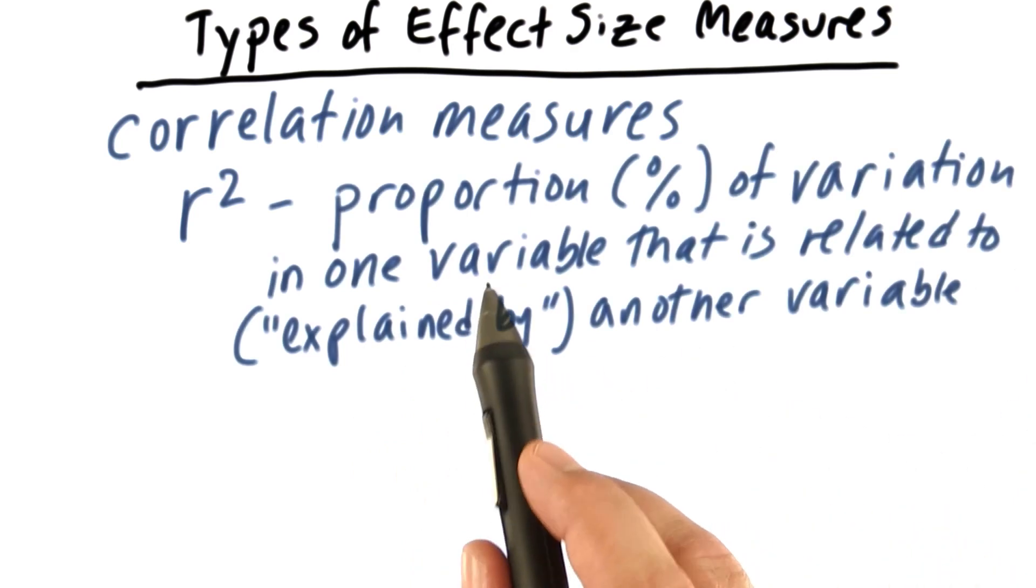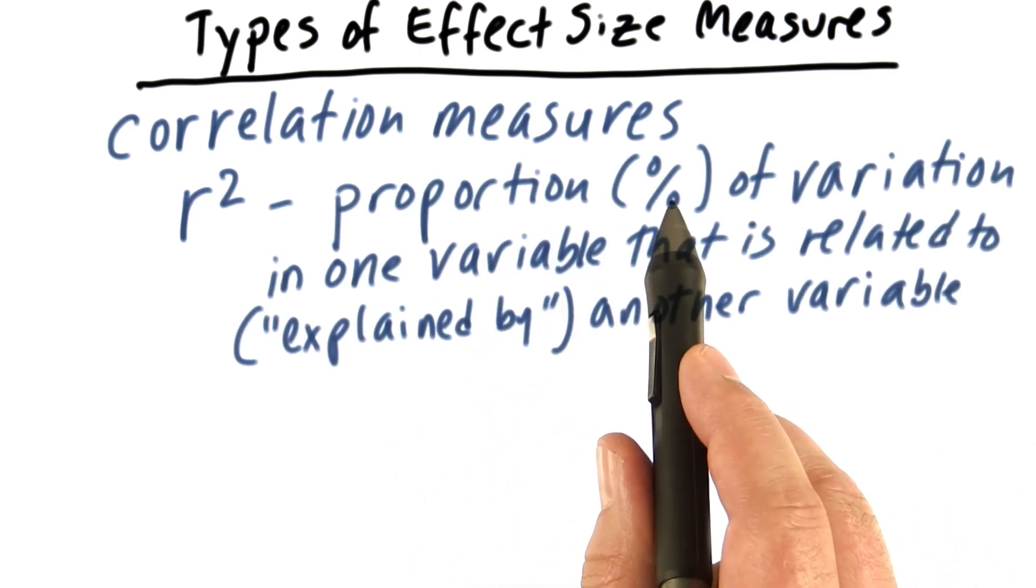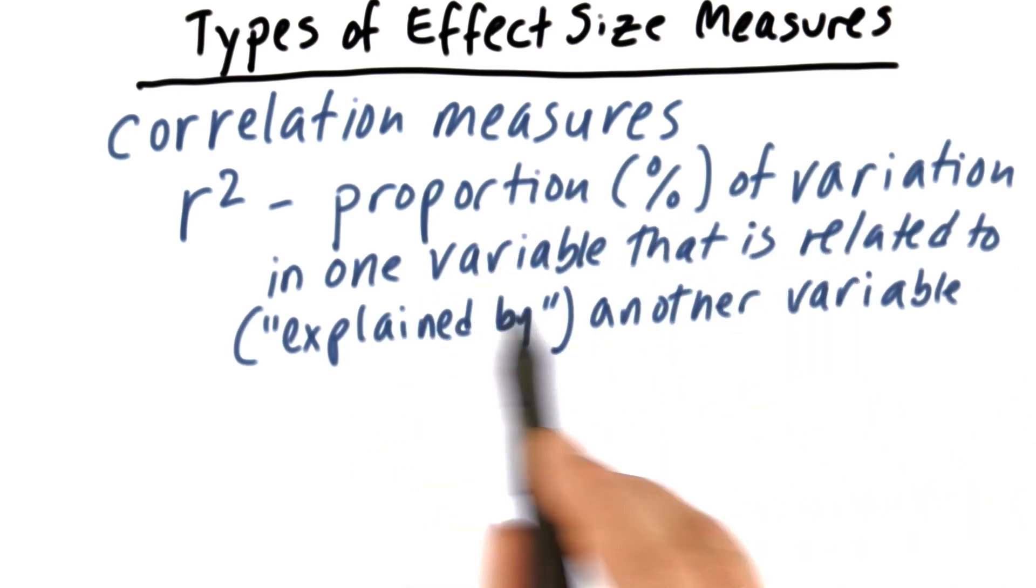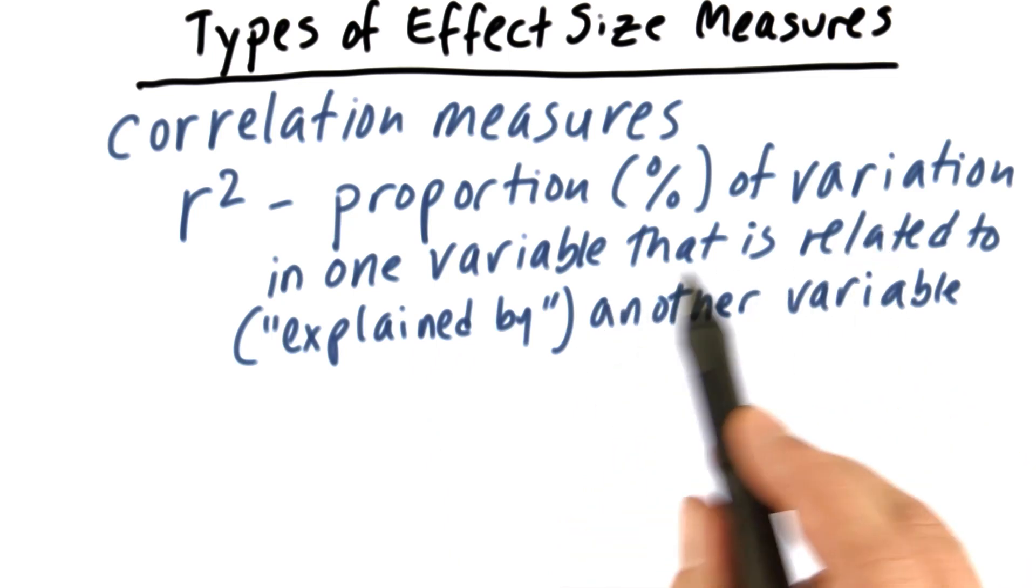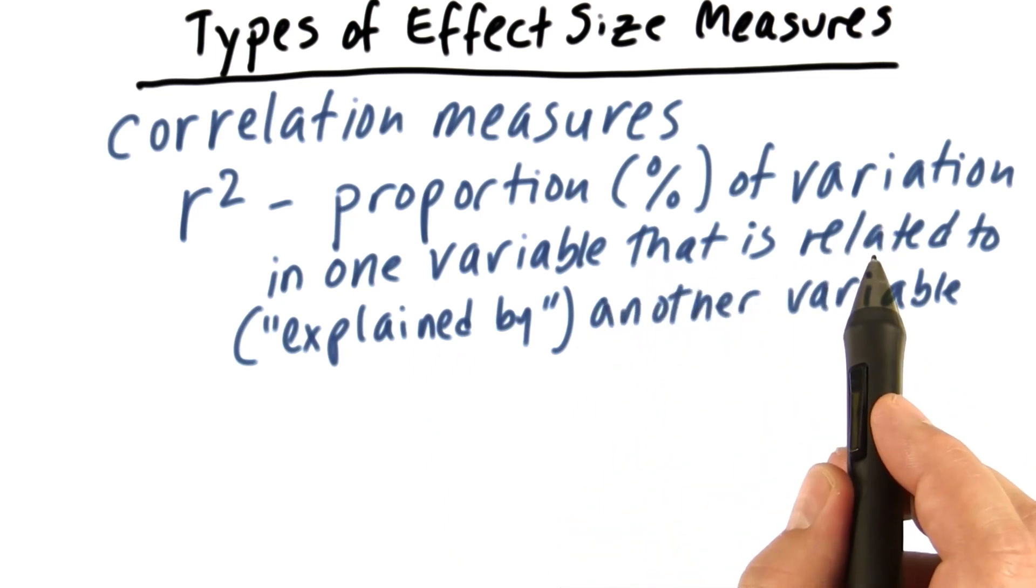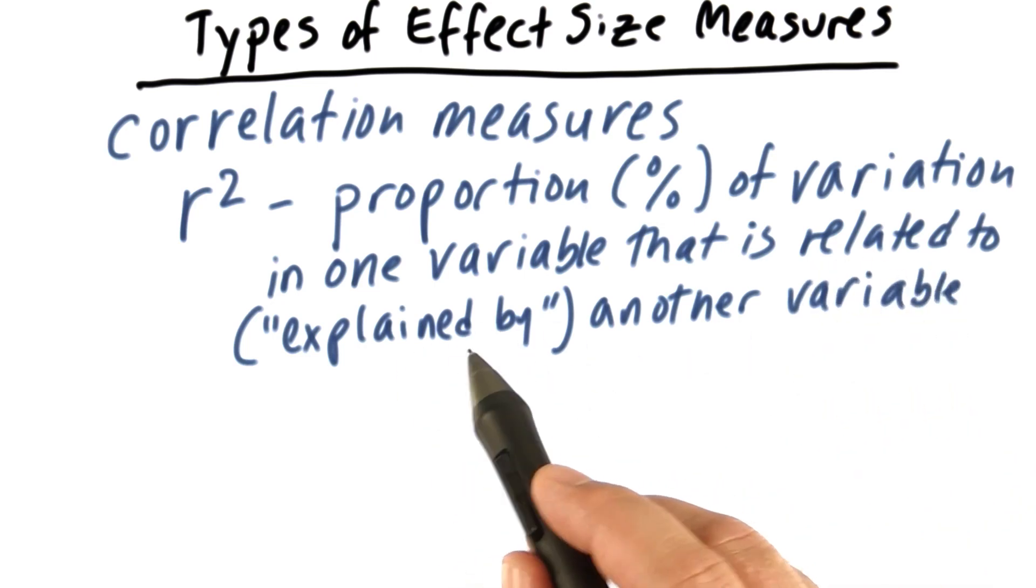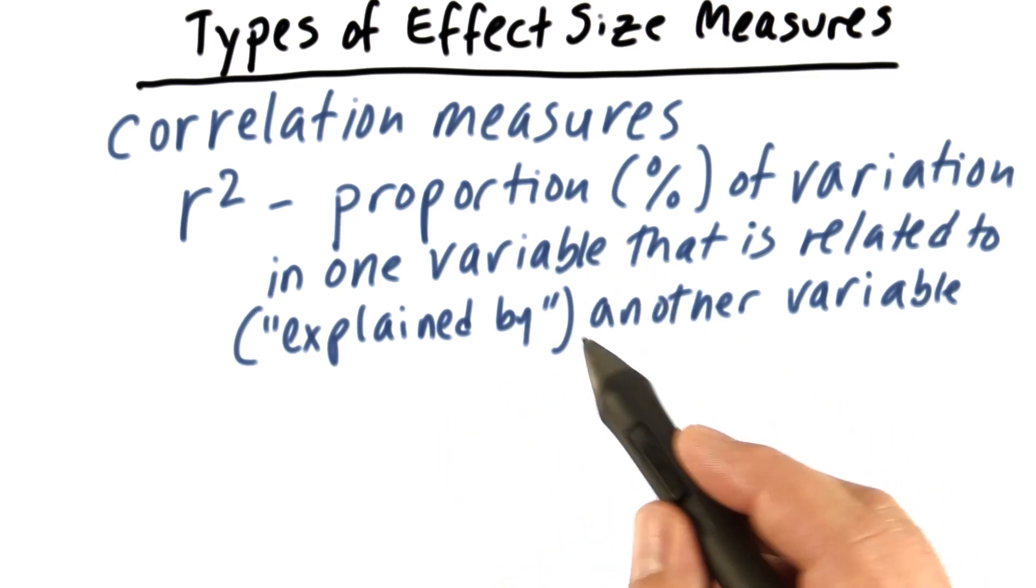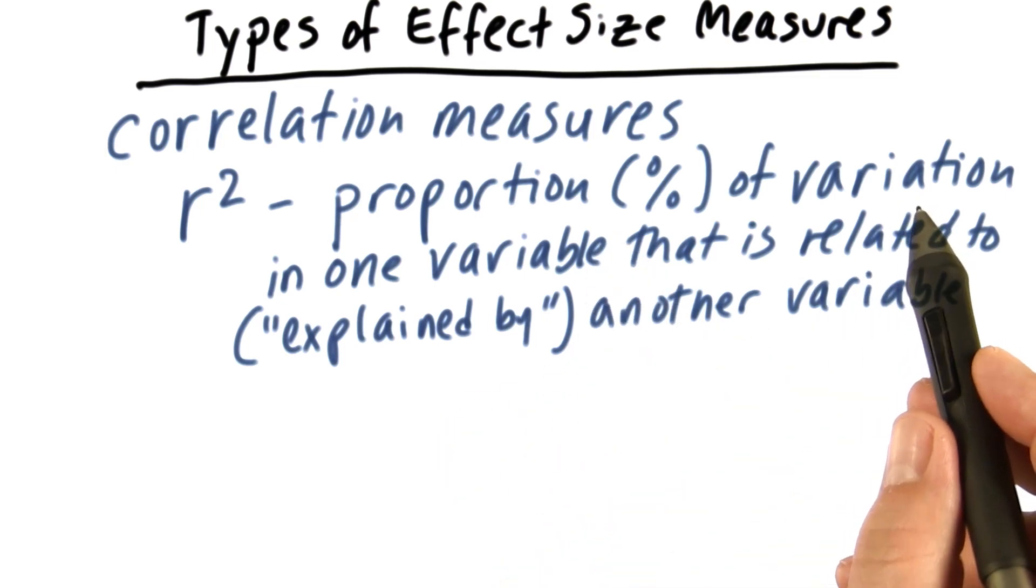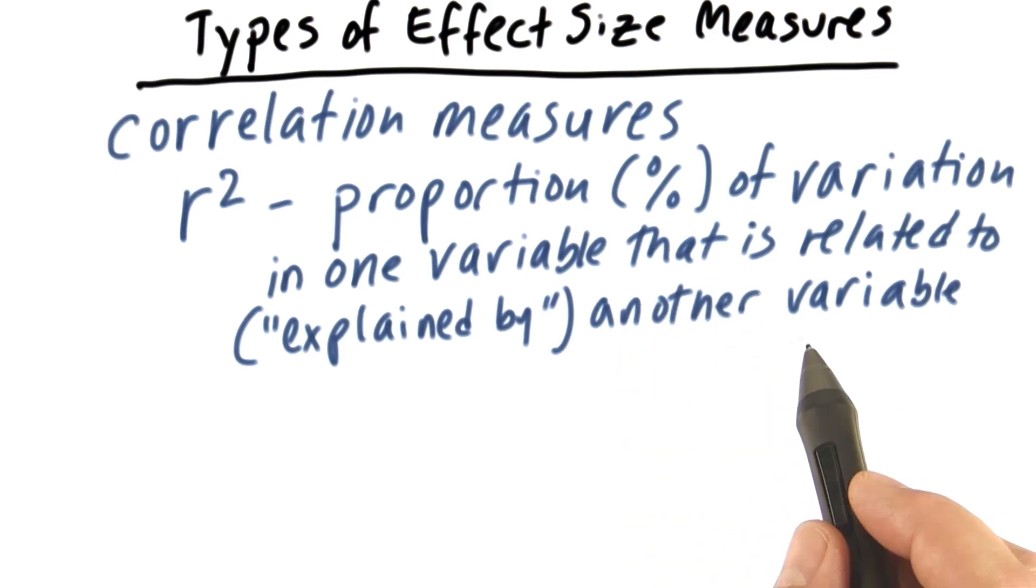R squared tells us the proportion or percentage of variation in one variable, in other words, change in one variable, that is related to another variable. And sometimes we say, instead of related to, we say explained by. What we mean by explained by is that we can explain a certain percentage or proportion of variation or change in one variable by knowing the value of the other variable.